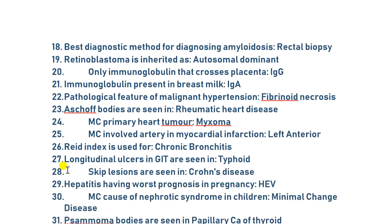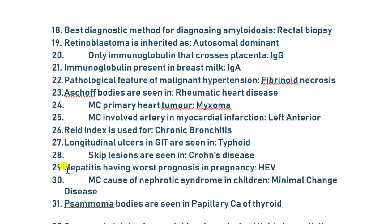Best diagnostic method for diagnosing amyloidosis is rectal biopsy. Retinoblastoma is inherited as autosomal dominant. Only immunoglobulin that crosses the placenta is IgG — this is very commonly asked. It's not IgM or IgA, only IgG crosses the placenta. Immunoglobulin present in breast milk is IgA.